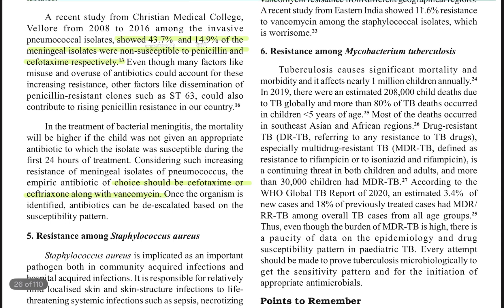Next, Mycobacterium tuberculosis — one of the most common community-acquired organisms with a very high mortality rate if it goes undetected. Around 80 percent of TB deaths occur in children less than five years of age among total TB deaths, which is why this is particularly significant.